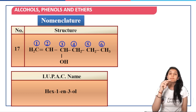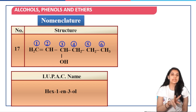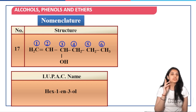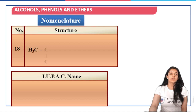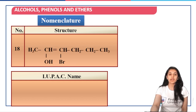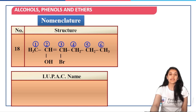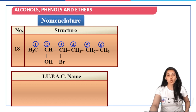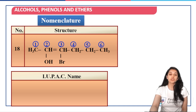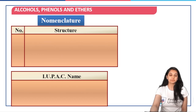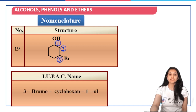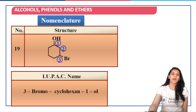Next question: give preference to the double bond. The numbering will start from the left-hand side, and out of bromo and hydroxyl, you will give preference to bromo. So that is going to be 3-bromo-hex-2-en-2-ol. Next question is very simple — it's cyclohexane with two substituents, so you simply write 3-bromocyclohexan-1-ol.